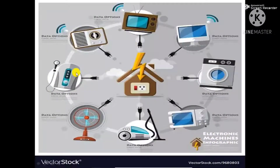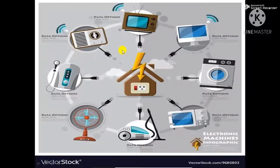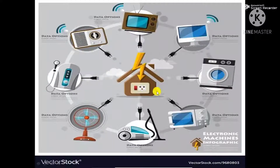You learnt in the previous class that a computer is a machine. All machines work with the help of electricity, so they are called electronic machines. You can see here there are many machines like TV, washing machine, oven, fan — these all work with the help of electricity, so they are called electronic machines.